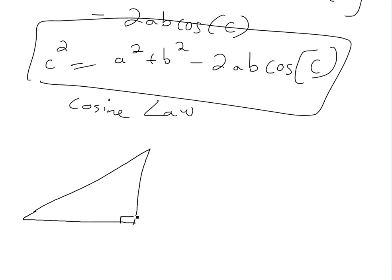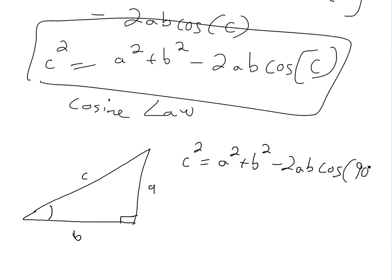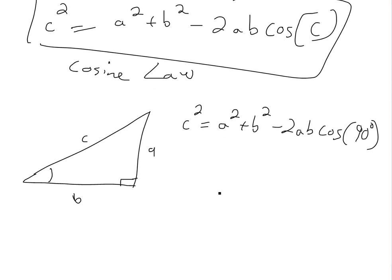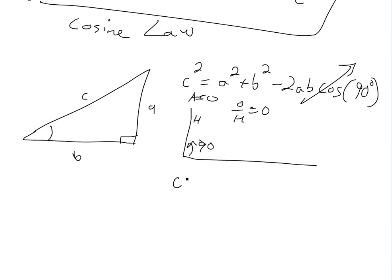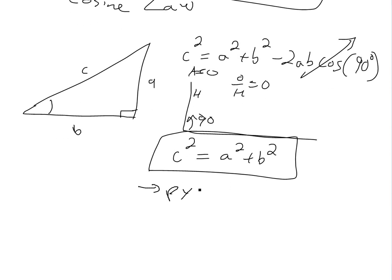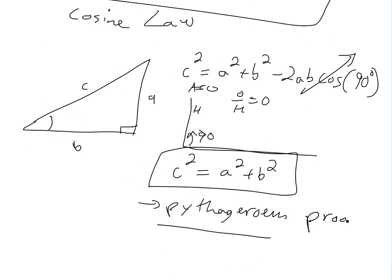Also, for a right angle triangle, this gives us the Pythagorean theorem. If the angle C is 90 degrees, then C squared equals A squared plus B squared minus 2AB cosine of 90. Since cosine of 90 degrees is zero — the adjacent side is 0 over hypotenuse — this term cancels, and we're just left with C squared equals A squared plus B squared. So that's the Pythagorean theorem, proved using the law of cosines.